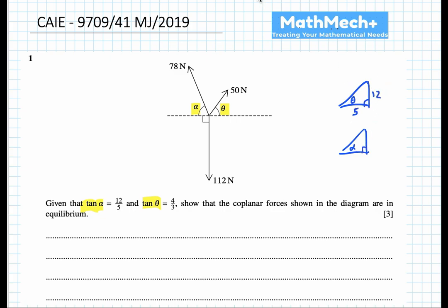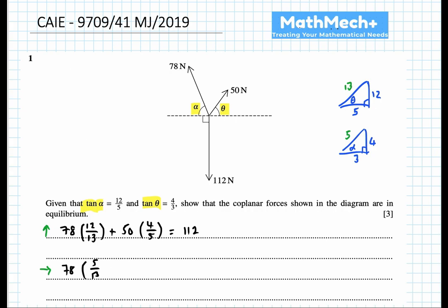We're finding the components of sine and cosine to find the unknown values, using Pythagoras to find the hypotenuse. We get 78 sin(12/13) plus 50 sin(4/5) equals 112, which is the force we were given — resolving forces vertically. Horizontally, 78 times 5/13 minus 53 times 3/5 equals 0, confirming equilibrium. When calculated, 72 plus 40 equals 112, proving the coplanar forces are in equilibrium.